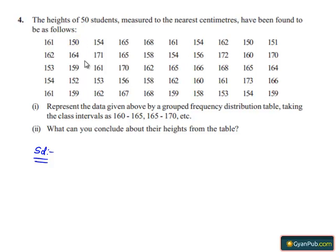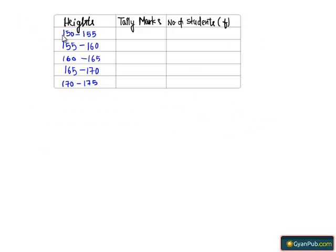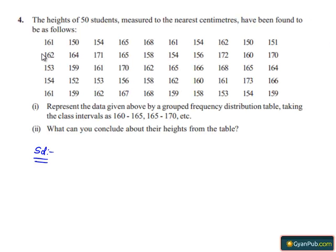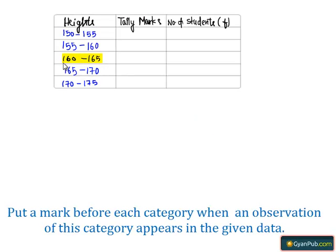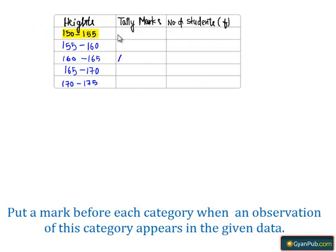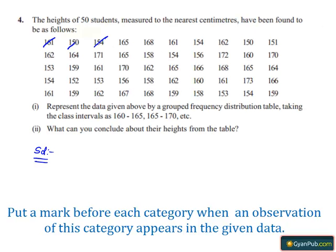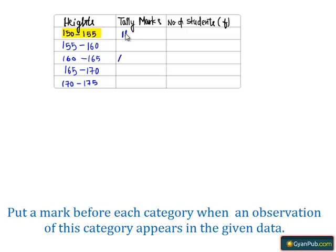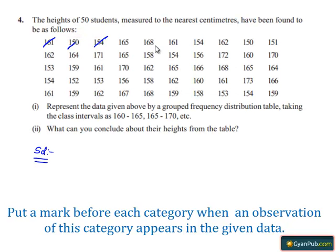We took 150 to 175. Now let's tally: 161 lies in the interval between 160 to 165. 150 lies in between 150 to 155. 154 lies in between 150 to 155. If we do similarly, we get the tally marks table as follows.